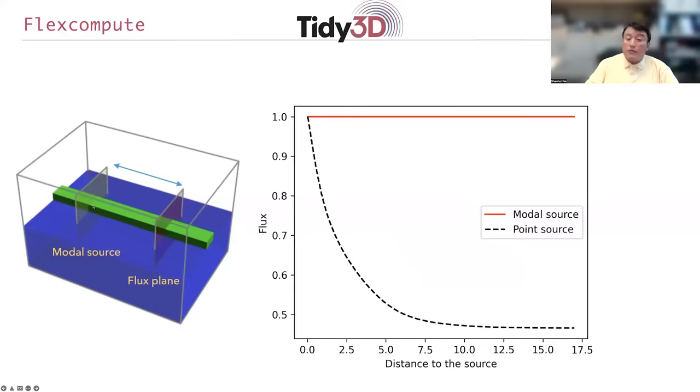Whereas if you put a point dipole source, the flux initially decays because the dipole is not perfectly matched with the mode, so there's some radiation that has to go out. And then after some propagation distance, the flux settles, at which point the mode settles into the desired mode.